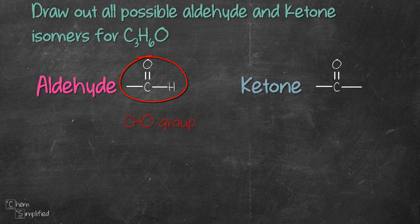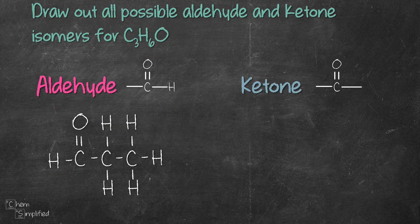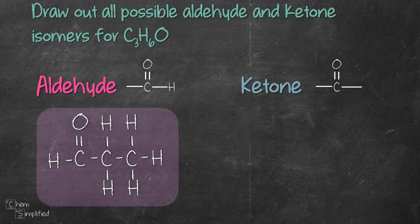Let's start with aldehyde. Since we have three carbons, let's place them next to each other, and then we'll add in the carbonyl group and hydrogen right next to it. Then we'll fill in the remaining bonds on carbon with hydrogens. Keep in mind that carbon makes four bonds, so let's fill in with the appropriate number of hydrogens for both carbons.